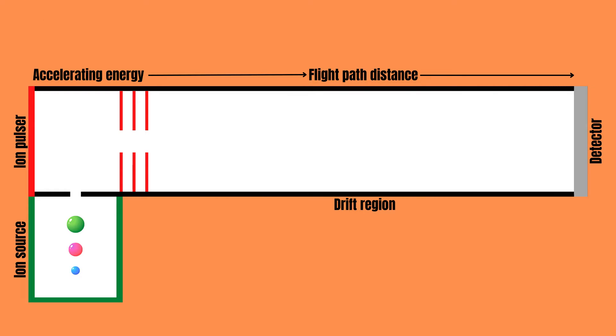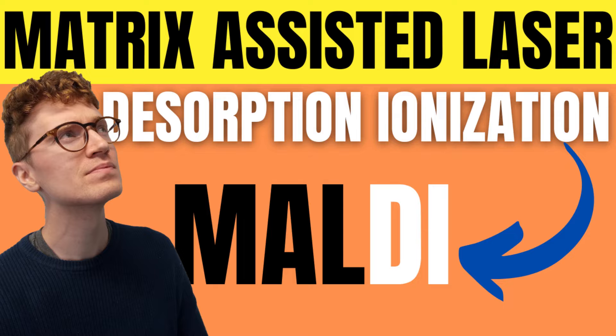So first, before the sample can even enter the mass analyzer, it has to be ionized. This can happen in several ways, but one common method that is used together with time of flight is MALDI, or matrix-assisted laser desorption ionization, which I have covered in more detail in a video that will be linked by the end of this one.